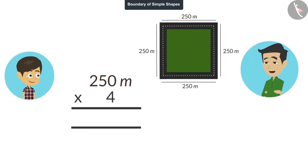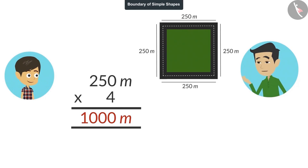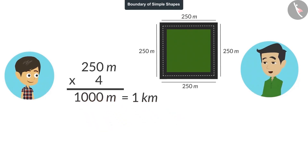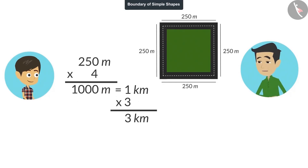So tell me, what is the length of the boundary? 250 multiplied by 4 will be 1000. That means the length of this boundary is 1000 meters. And how many kilometers is 1000 meters? 1 kilometer. Now tell me, how many rounds do I have to take of this boundary to complete 3 kilometers? For a 3 kilometer walk, you have to take 3 rounds of this boundary. Perfect, Reyanj. And this is what I do — I take 3 rounds of this boundary, which tells me that I have walked 3 kilometers.